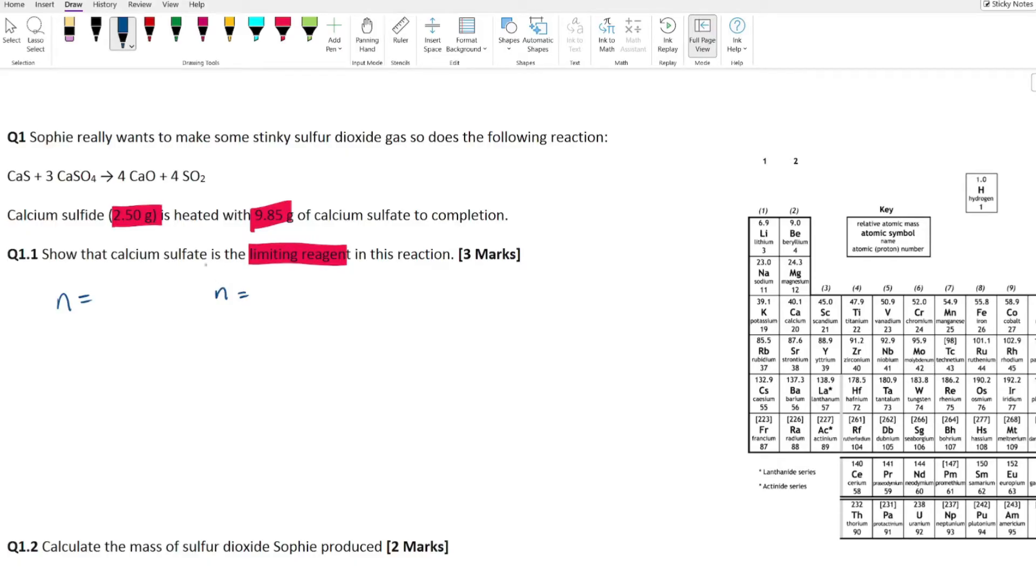n just being the symbol for moles, you should know this, guys. What are these going to be? Can you remember? n equals cv. This is for concentration volume, solutions primarily, and then we've got n equals m over mr.